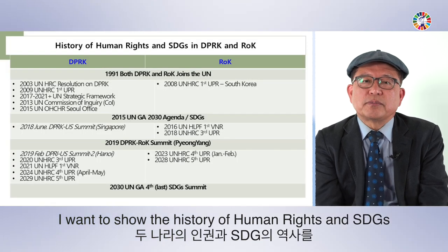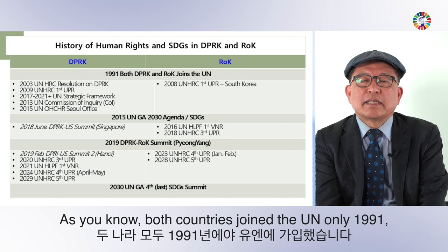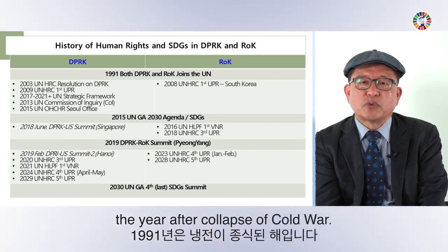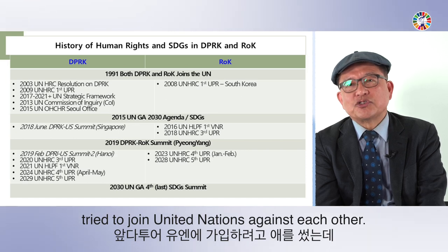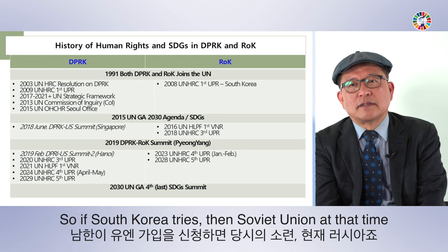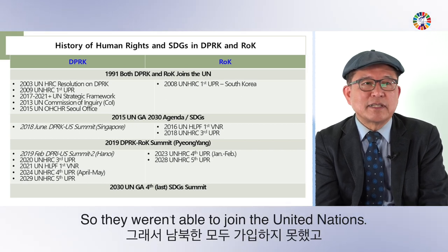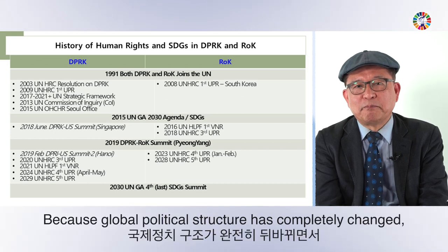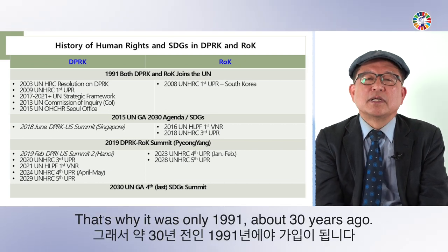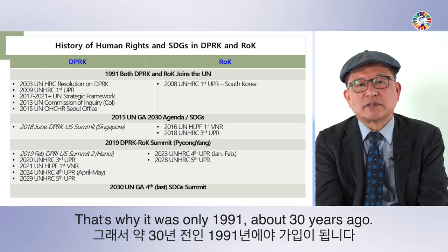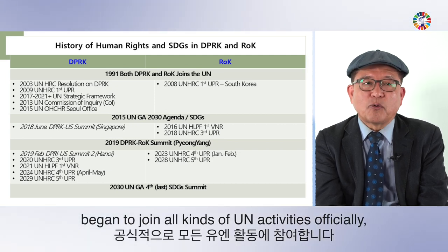Let's look at the history of human rights and SDGs in both countries. Both North and South Korea joined the UN only in 1991, the year after the collapse of the Cold War. Before that, during the Cold War, they competed to join the UN. If South Korea tried, the Soviet Union vetoed; if North Korea tried, the United States vetoed. Finally, with the changed global political structure, they compromised and joined together in 1991.